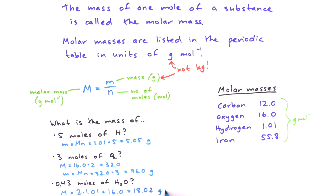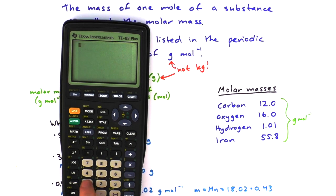We plug that into our formula, so we multiply by 0.43. We'll put that into our calculator and we get about 7.7 grams.